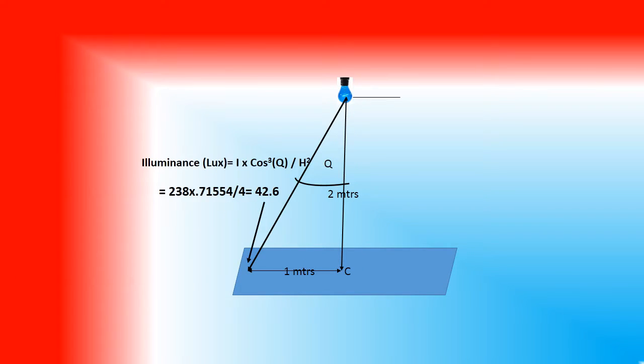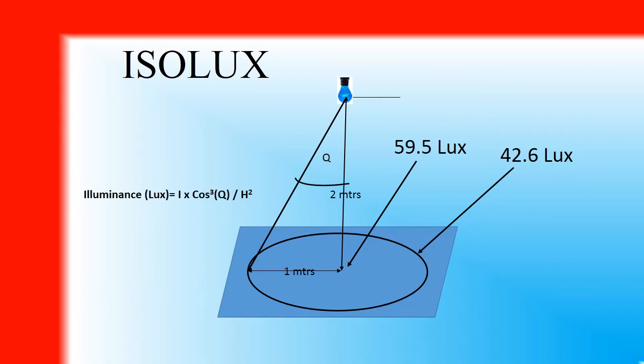Assuming this point just below the lamp to be C, we consider a point 1 meter away from this point on the working plane. Here the illumination level will be 42.6 lux because the cos³θ will be 0.715. Since 1 meter away from C there will be a circle around C as the center, thus the isolux lines of 42.6 would be described as a circle around center C of the working plane.